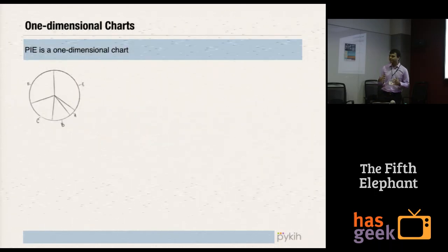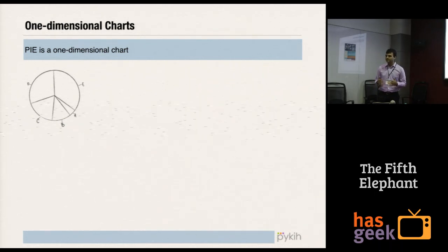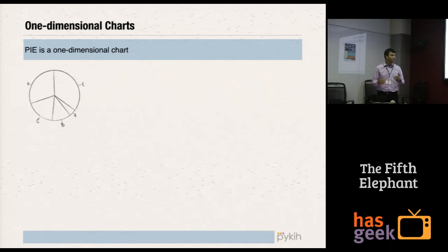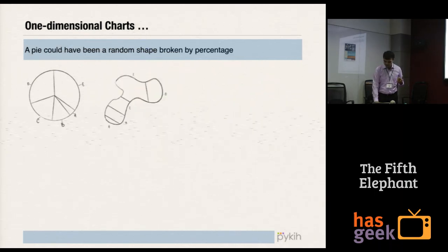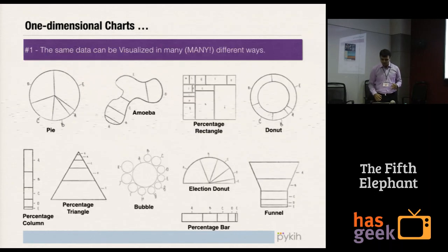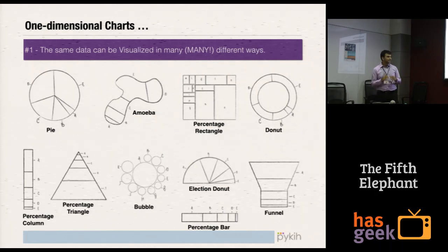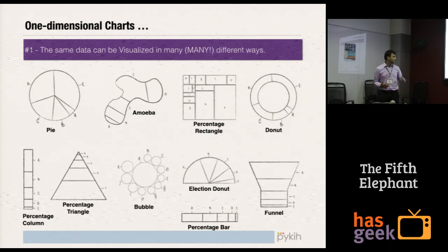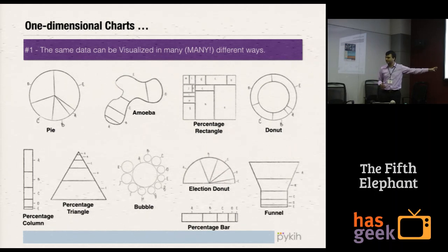At Spikey we follow a model called the 'data first, design later' approach to design our data visualizations. The first step is building a categorization of various standard charts and graphs. We call the pie chart a one-dimensional chart — it might have been just an amoeba-like shape broken by area and it'll still be a pie chart. All of these are pie charts. The same data can be visualized in many different ways, but which chart you use for which business case changes a lot. For Maslow's hierarchy of needs you use a triangle; for sales data, a funnel; for elections, an election donut. But the dataset behind all of these is absolutely the same.